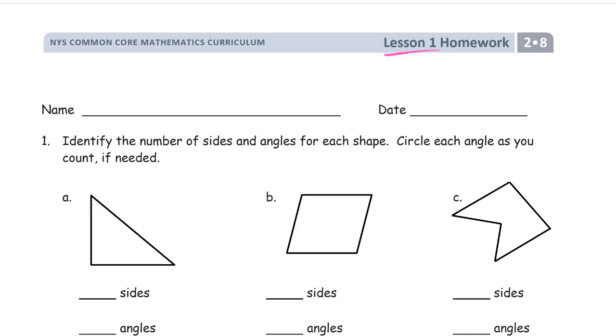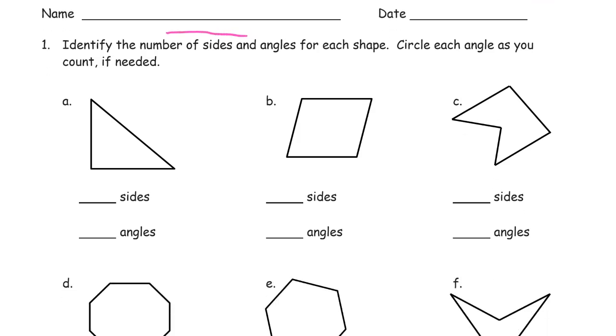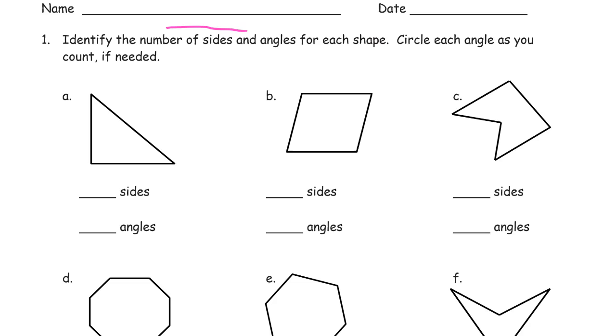Welcome to the homework for lesson one. This is module 8 of second grade. Get your name right on here first. Pause the video if you need to. Make sure you have time to do that, and then you can just pause it at any time to catch up. Identify the number of sides and angles for each shape. Circle each angle as you count if needed.